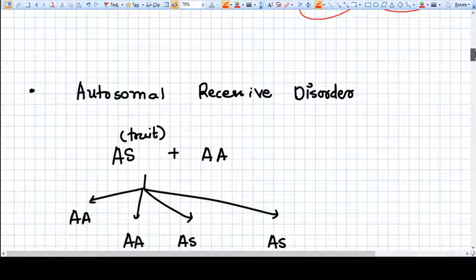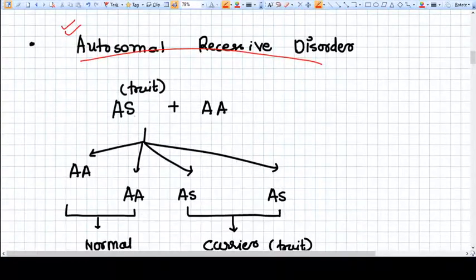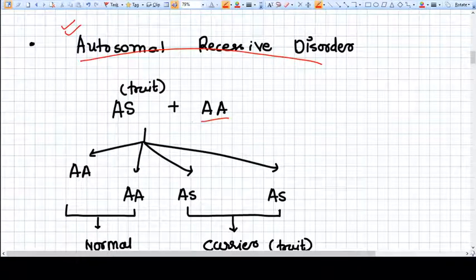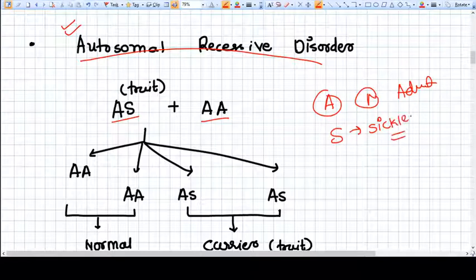I am going to explain the inheritance pattern for autosomal recessive disorder, because this sickle cell anemia is an autosomal recessive disorder. What actually happens here: A means normal or adult and S means sickle.